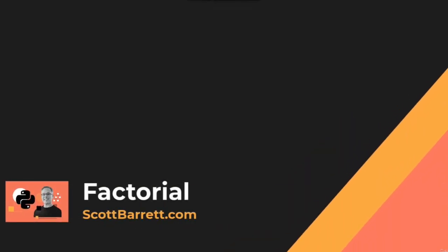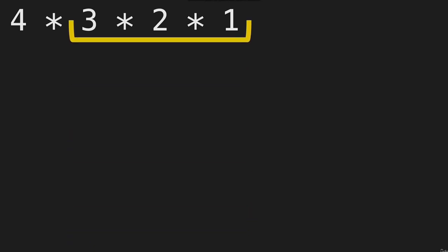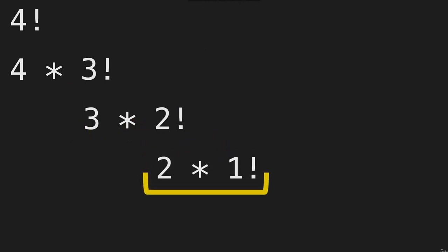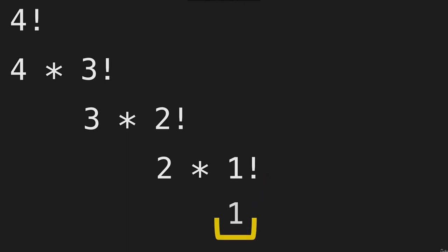Now we're going to use recursion to solve a factorial. Factorial is used to teach recursion in pretty much any course that covers it. If you've never seen a factorial before, it looks like this: four factorial is four times three times two times one. Three times two times one equals three factorial, so four factorial equals four times three factorial. Three factorial equals three times two factorial, and two factorial equals two times one factorial. One factorial is our base case — it's just one.